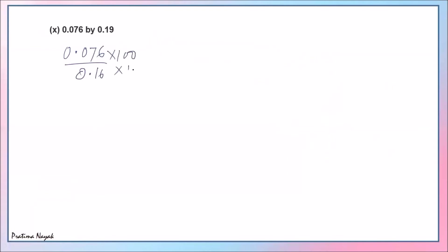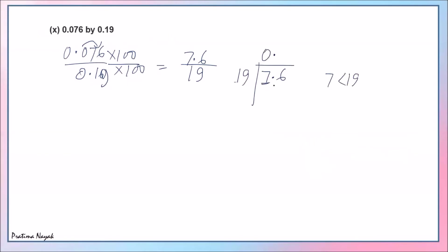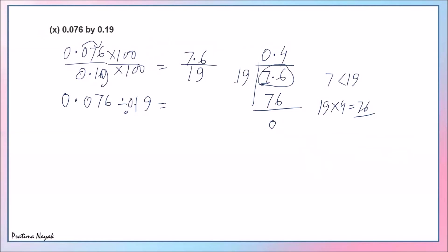Part 10: 0.0756 divided by 0.19. Two numbers after decimal, multiply by 100, giving 7.56 divided by 19. Since 7 is less than 19, put 0 decimal, then consider 76. 19 fours are 76 exactly. Answer is 0.4. So 0.0756 divided by 0.19 equals 0.4.